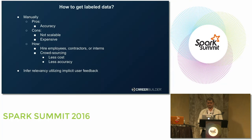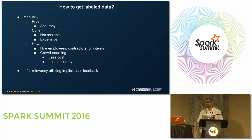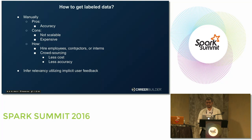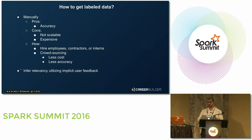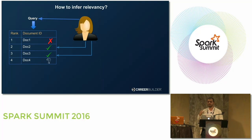So how to get a labeled dataset? You have two main options. Option one: hire an army of data analysts to manually tag the dataset. The pros: it is very accurate because it is human labeling. The cons: it is not scalable and it is expensive. You can hire employees, contractors, interns, or go with crowdsourcing — lower cost but less accuracy. The second option is to infer relevancy utilizing implicit user feedback, and this is what we did.